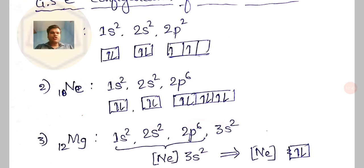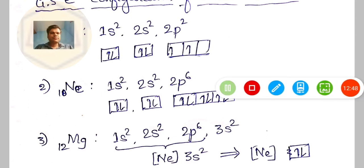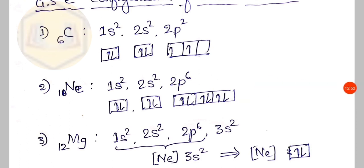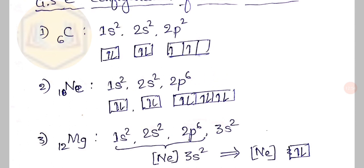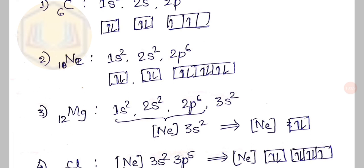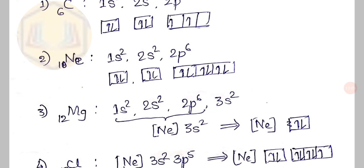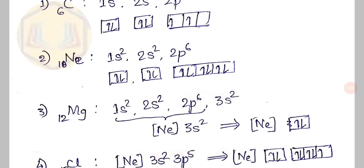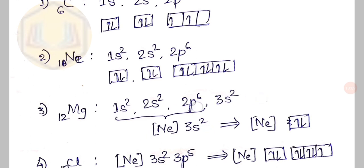Next, neon: its electronic configuration is 1s², 2s², 2p⁶. Neon is a rare gas and this electronic configuration can be taken as a reference for writing the configurations of later elements. For magnesium with atomic number 12: the first 10 electrons correspond to the neon configuration, and then two more electrons fill 3s, giving 1s², 2s², 2p⁶, 3s² — which can be written in abbreviated form as [Ne] 3s².